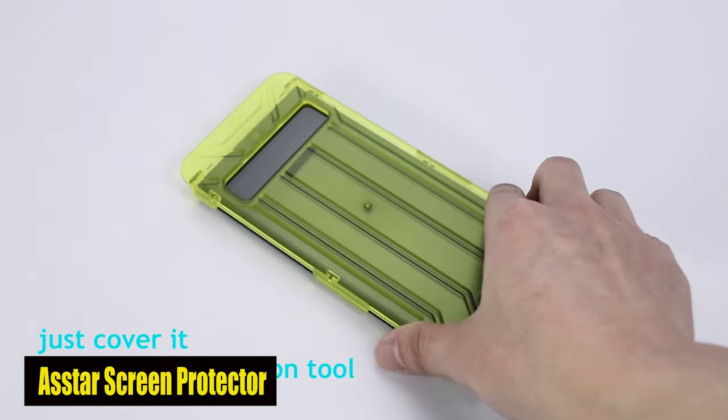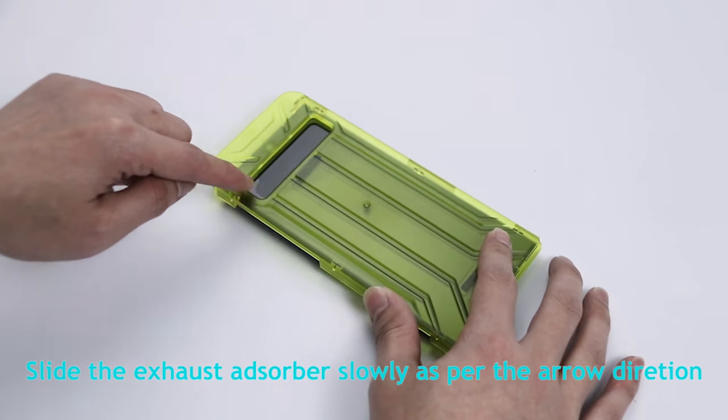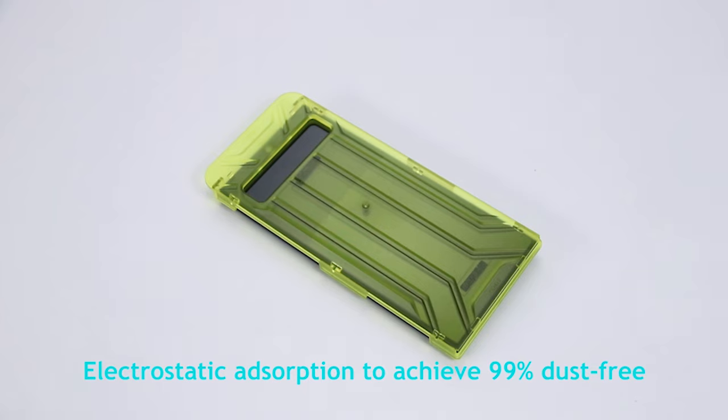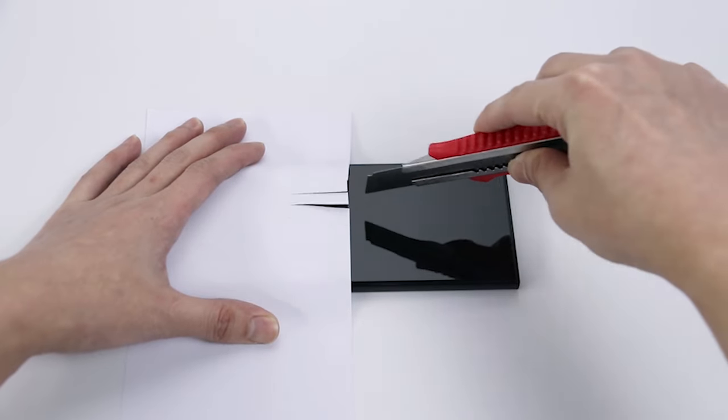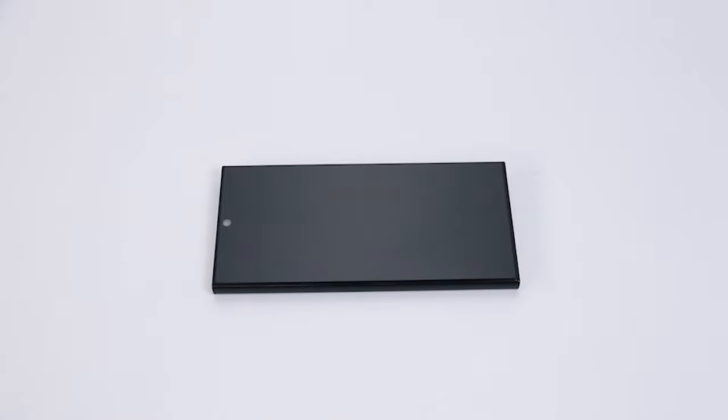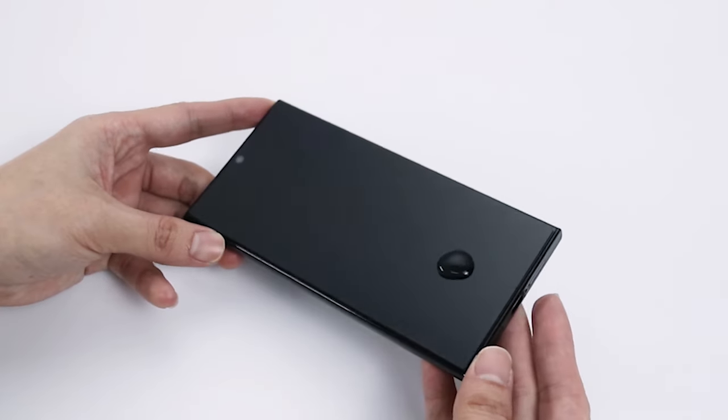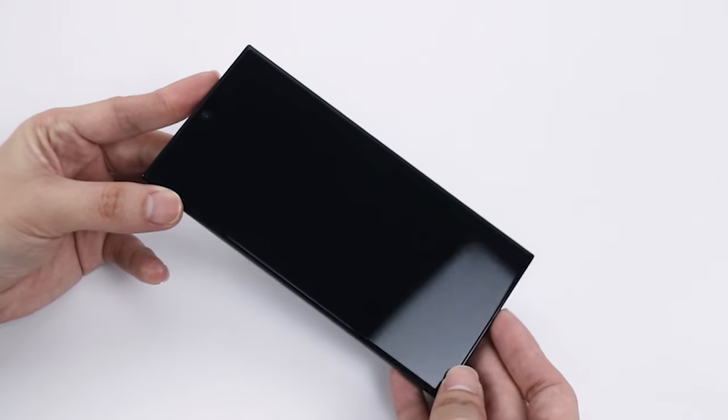Number 5: ASTAR screen protector. The ASTAR screen protector is a game-changer when it comes to protecting your sensitive data. With the ability to limit the viewing angle to 28 degrees, this screen protector ensures that your personal, private, and sensitive information stays hidden from prying eyes. Whether you're commuting on public transportation or simply need to maintain your privacy in public settings, this privacy screen protector is the ideal solution. Additionally, the easy installation process and dust-free pack make it a hassle-free addition to your device.